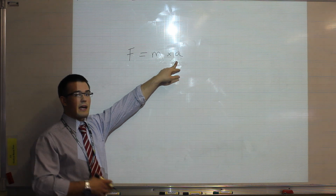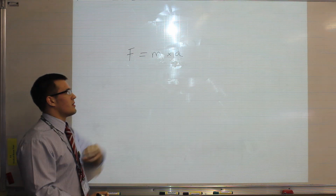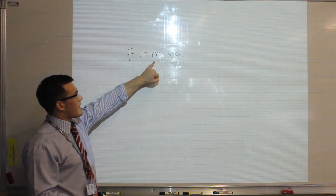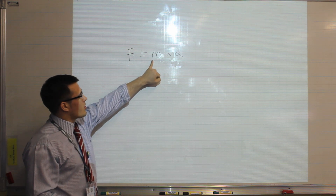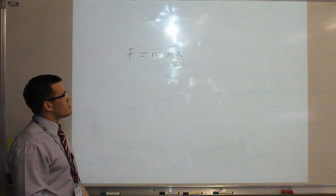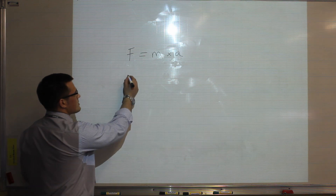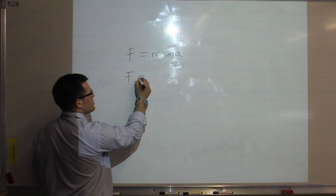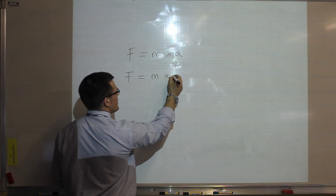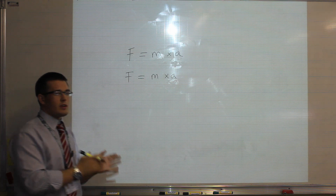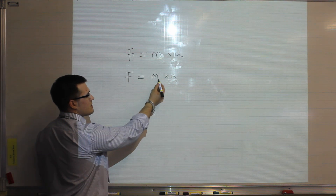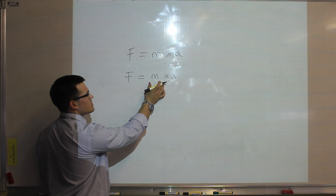The question could be to calculate the acceleration of the object or calculate the mass. So if I want to calculate the mass of an object, I need to make mass the subject of the equation. The way I do that is I can change the equation as long as I do the same thing to both sides, so that mass is the only thing on one side of the equation.